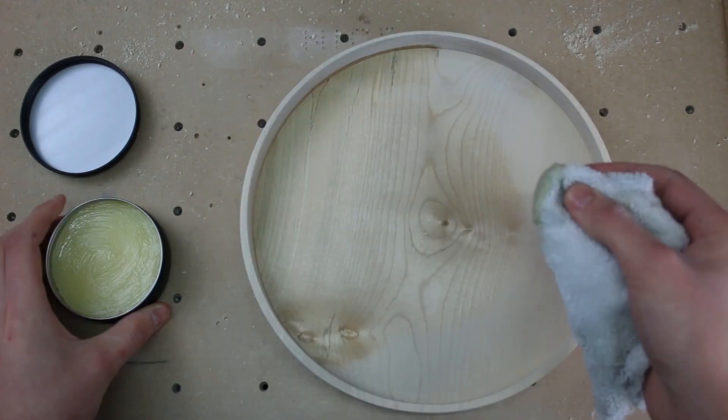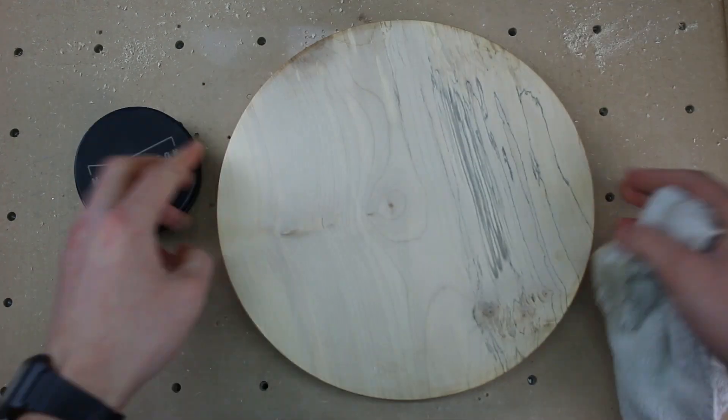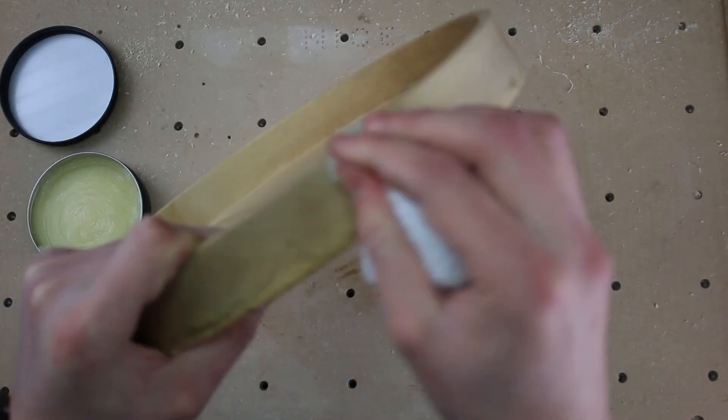To finish our bowl, we're going to be using a wax oil blend from MW Robinson. This is going to leave a nice protective coat and a nice shine on our project.